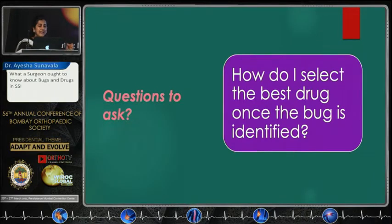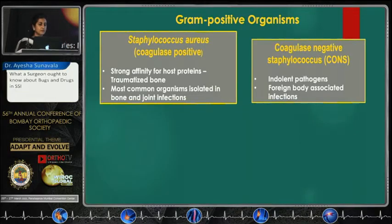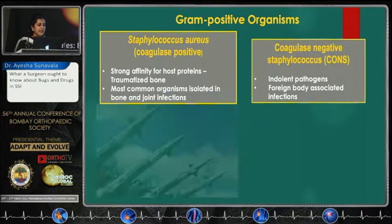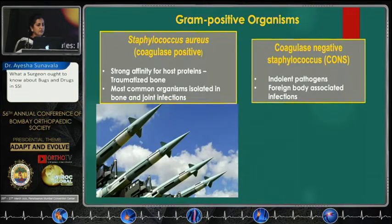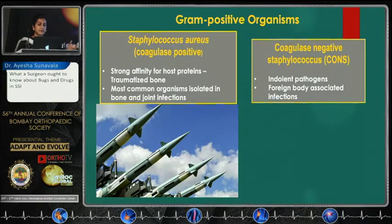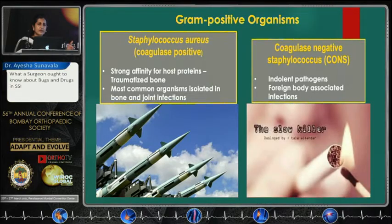Next question: how do I select the best drug once the bug is identified? Let's start with gram-positive organisms, for which staph aureus is really the most important. Staph aureus is a killer organism — it has a very strong affinity for host proteins, it causes severe sepsis, dramatic metastasis to various sites, and is the most common organism isolated in bone and joint infection. It is rapidly limb- and life-threatening. Coagulase-negative staph, on the other hand, is an indolent pathogen most associated with foreign body infections — it can cause loss of limb and life, but it happens slowly.